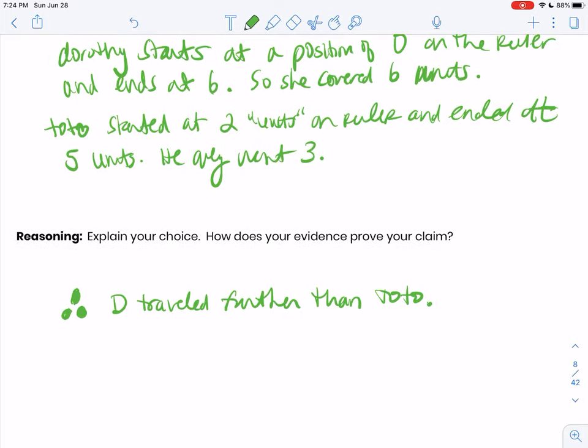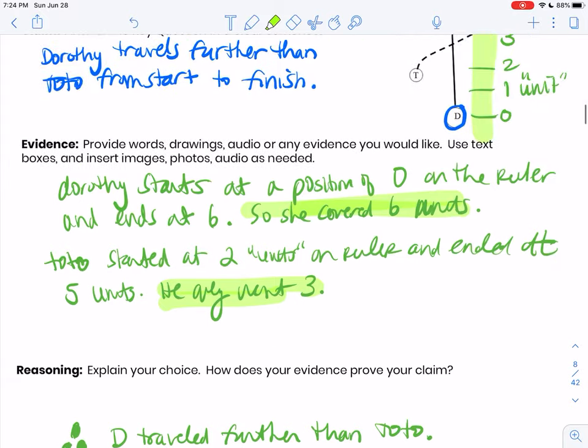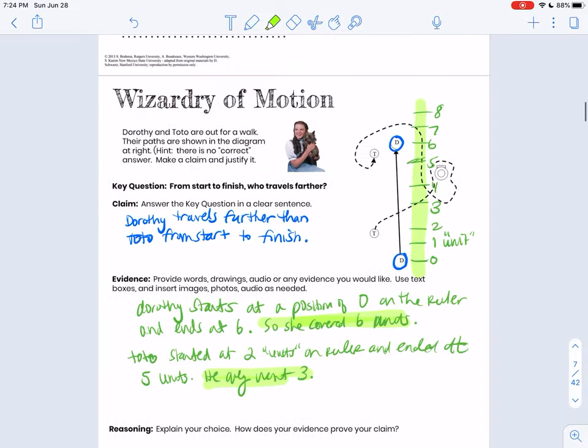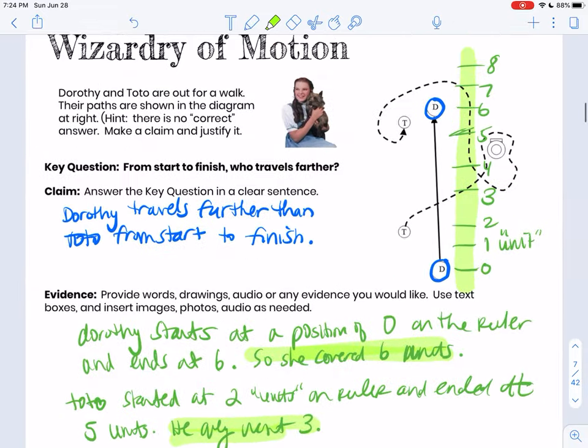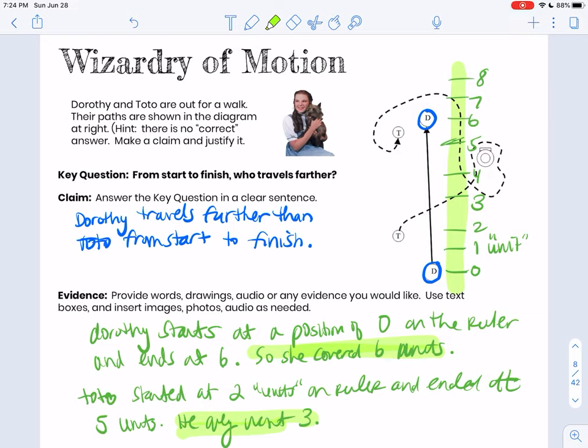Reasoning, then you're going to explain Dorothy went further than Toto. You could actually put this part - this part could probably go also in the reasoning. It can also go in the evidence. It could probably go either place. And then you're explaining your choice. So that would be what a Dorothy person would say, all right? So if you're a Dorothy person, that's your counterexample to what you said because you chose Toto.